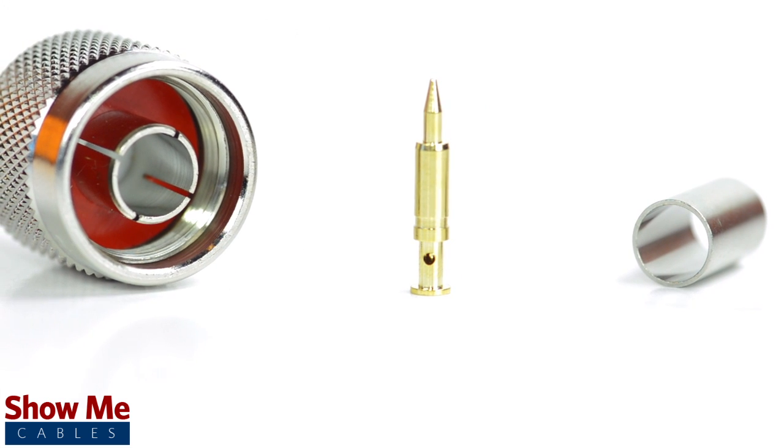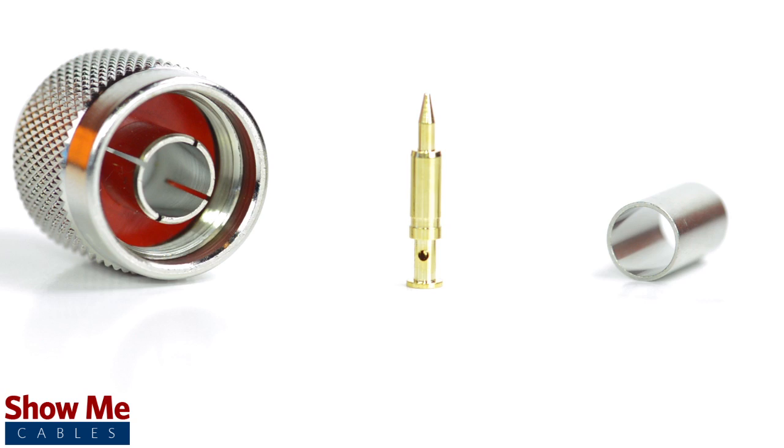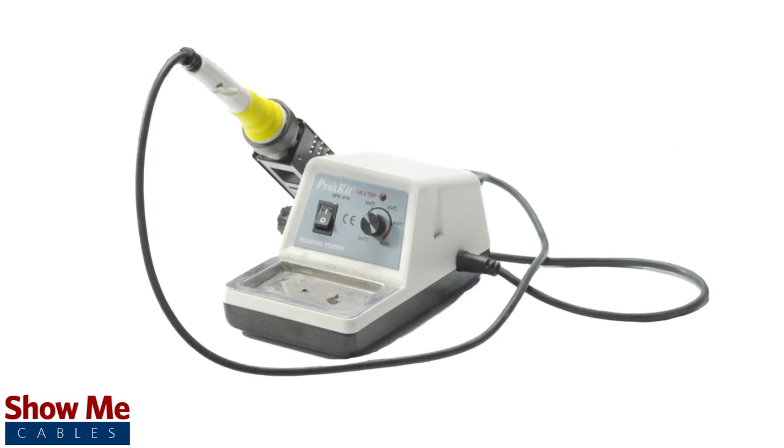The three piece connector consists of the connector housing, the pin, and the ferrule. For this installation you will need a coax stripper, coax cable, a soldering iron, a crimp tool, and the N type connector.